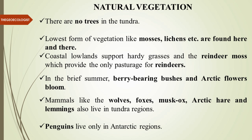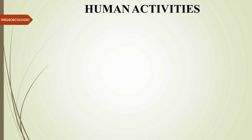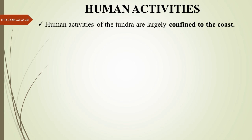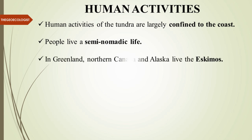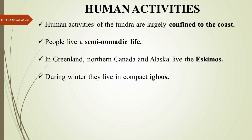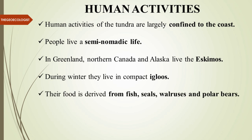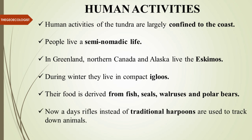Human activities in the tundra are largely confined to the coastal belt, as the interior is completely uninhabitable. People live a semi-nomadic life, shifting their place of living regularly. In Greenland, northern Canada, and Alaska, the people are called Eskimos — as noted in NCERT — and they live in compact igloos during winter. Their food comes from fish, seals, walruses, and polar bears. Nowadays, rifles have replaced traditional harpoons for hunting.